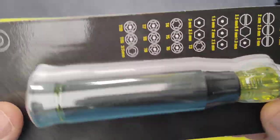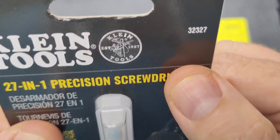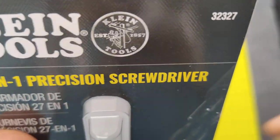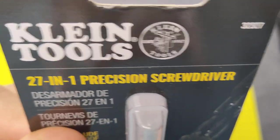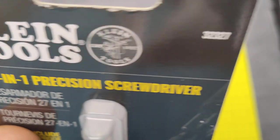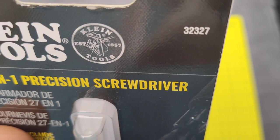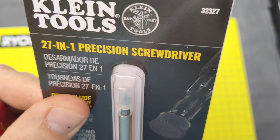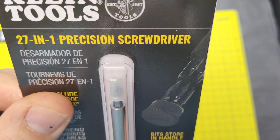Hey guys, a very quick unboxing and review of one of the new things I found from Klein Tools. The product number is 32327, it's a 27-in-one precision screwdriver.